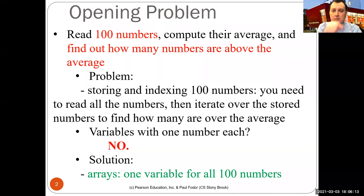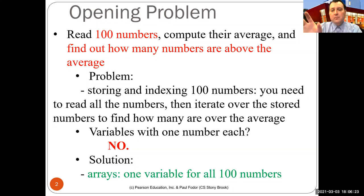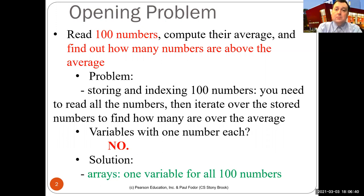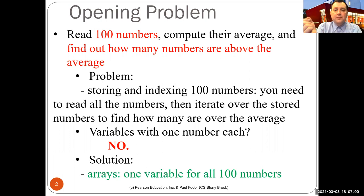You have to read all the numbers, then iterate over them to find the average, and then iterate again to find how many are above the average. You can combine finding the average with reading by keeping a running sum and dividing by 100. However, you still have to iterate again over the numbers. The naive solution with what we've learned so far is to have a variable for each number, which is not a good solution — it would be a very long program comparing every single variable with the average.